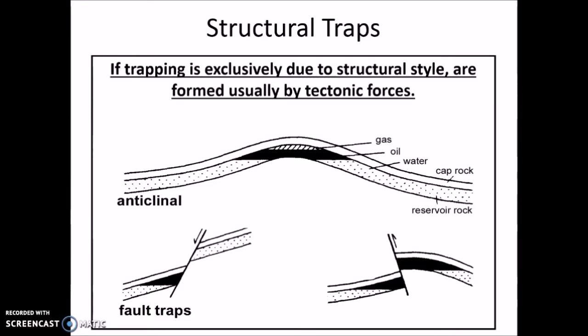Meanwhile for the faults, they usually occur where there is movement along a joint or fracture — it is the offset of the beds that could result in an impermeable layer being on top of a permeable layer. Normal fault is more efficient in trapping the hydrocarbon because this fault has higher permeability pathways compared to the reverse faults, which makes the hydrocarbon readily able to move.